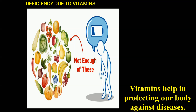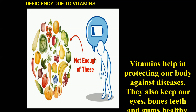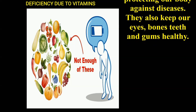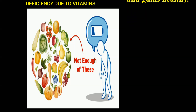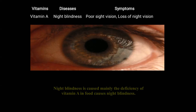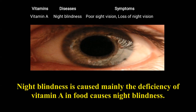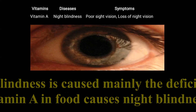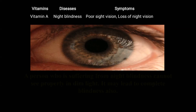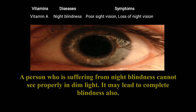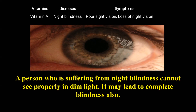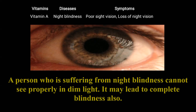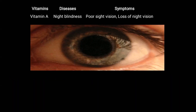Children, now let us discuss the deficiency due to vitamins. Vitamins help in protecting our body against diseases. They also keep our eyes, bones, teeth, and gums healthy. Vitamin A deficiency leads to night blindness, with symptoms like poor vision and loss of night vision. A person suffering from night blindness cannot see properly in dim light, and it may lead to complete blindness.